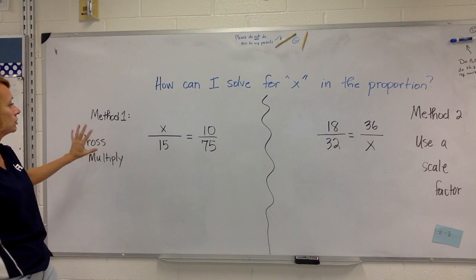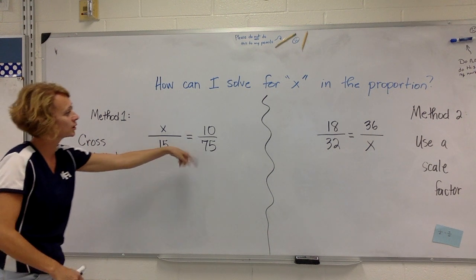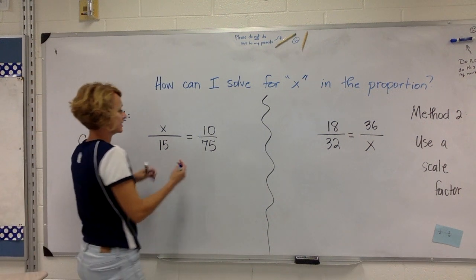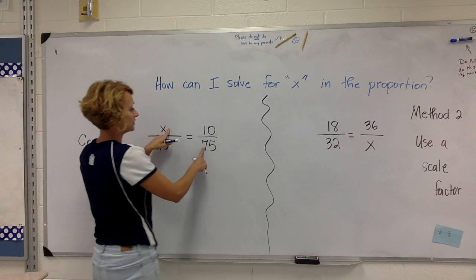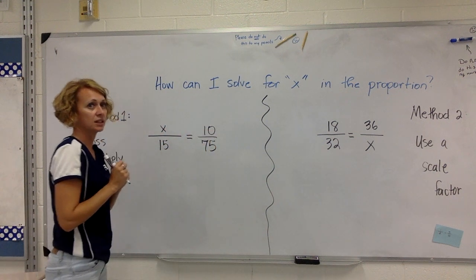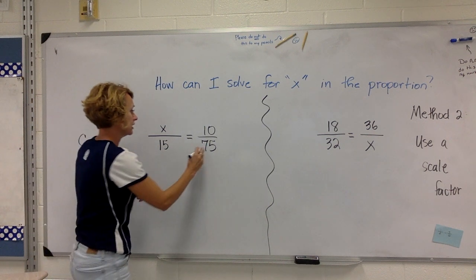In method one you can cross multiply to solve that proportion. Remember that cross products in a proportion are equal. So what I can do is I can say 75 times x is equal to whatever 15 times 10 is, and I can write that as an equation and solve for x. Let's do that.